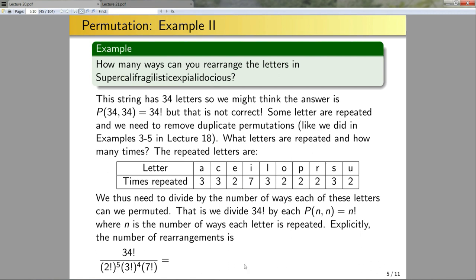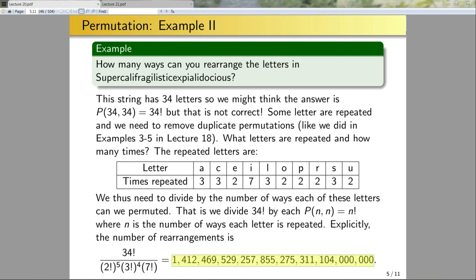This is a number I would not expect you to calculate analytically — many calculators will give an incorrect result due to rounding with doubles. But the exact value equals a specific large number. That's a lot of rearrangements, but much less than 34 factorial.